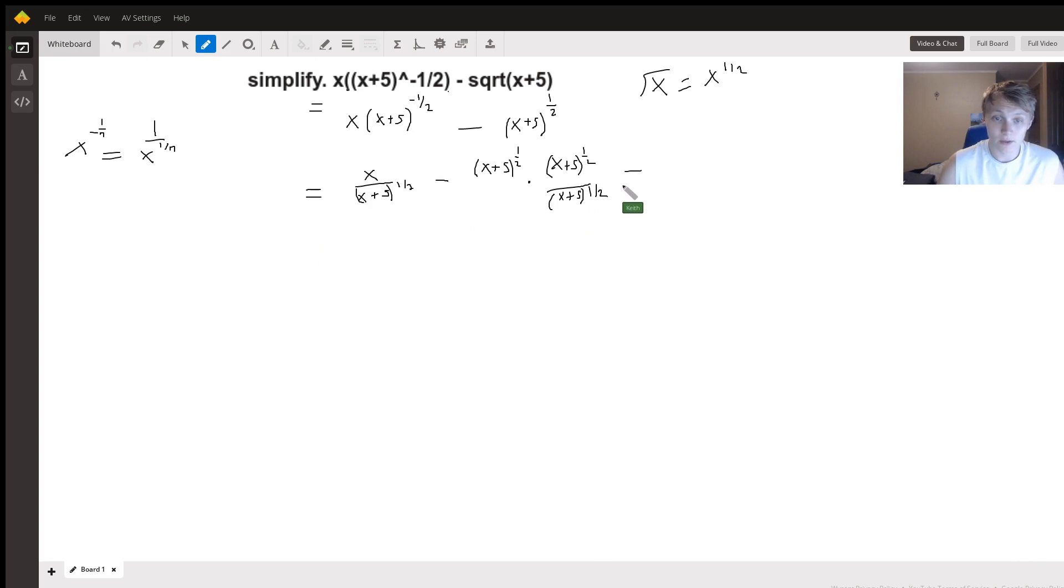And this is going to be equal to x over root x plus 5 minus – now this is going to be x plus 5 to the one-half times x plus 5 to the one-half. Well, that's equal to the one-half plus one-half.